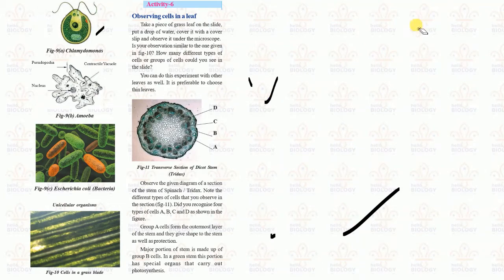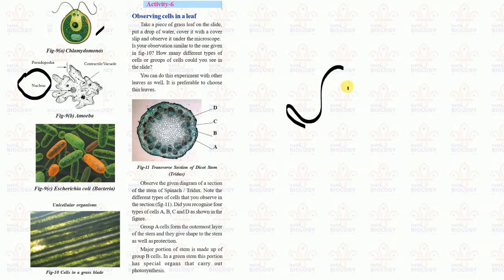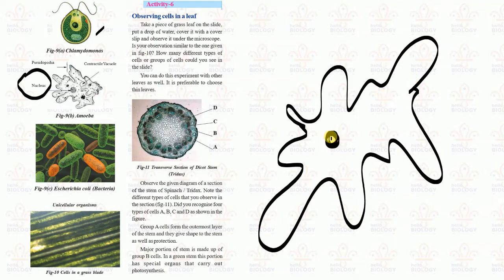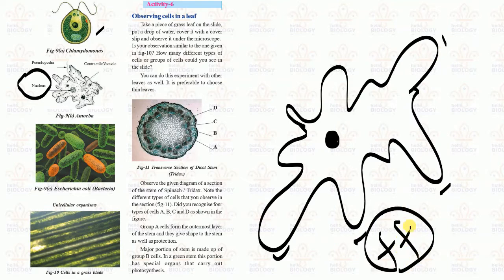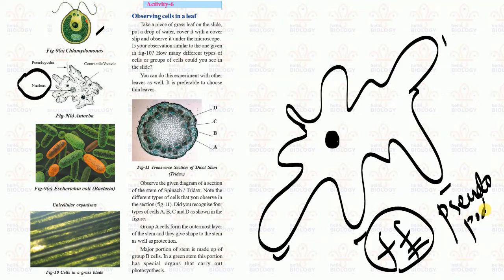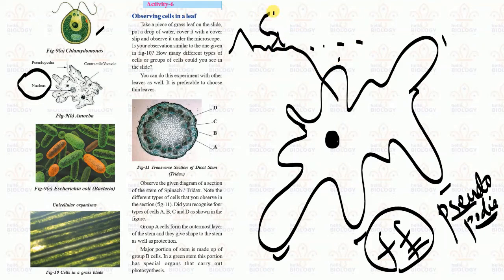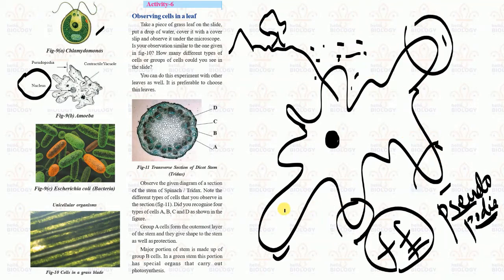Amoeba is also a unicellular organism consisting of only a single nucleus, meaning a single cell is present. It has structures called pseudopodia, or false feet. Pseudo means false and podos means feet. Amoeba lives in water and uses these false feet - unlike our human feet - to move from one place to another.